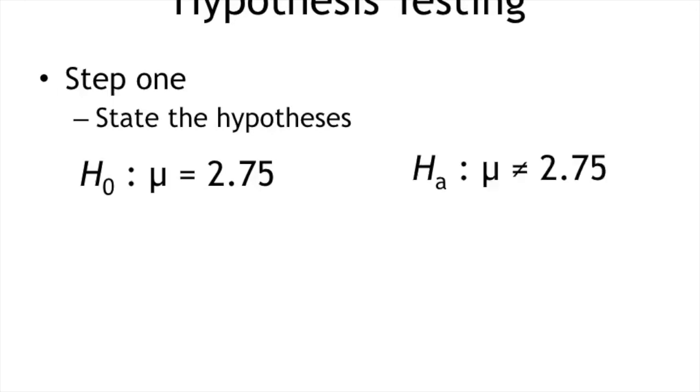Our alternative hypothesis is that the average GPA for graduating seniors is any other number, any number from 0 to 4 but not 2.75. So this reads, the alternative hypothesis is such that the mean does not equal 2.75.